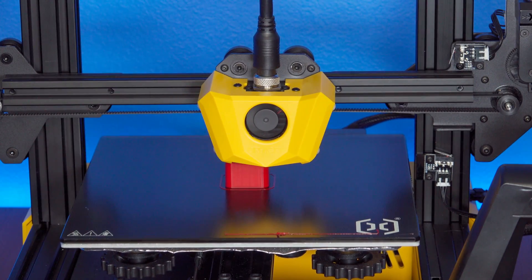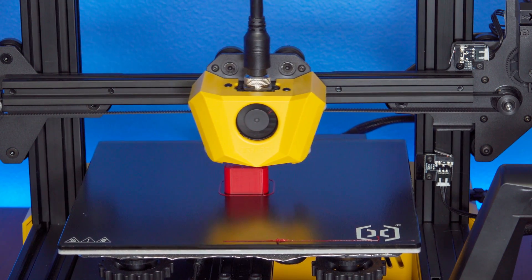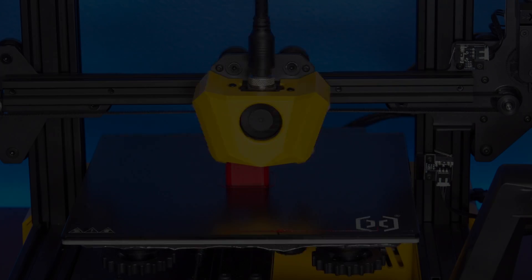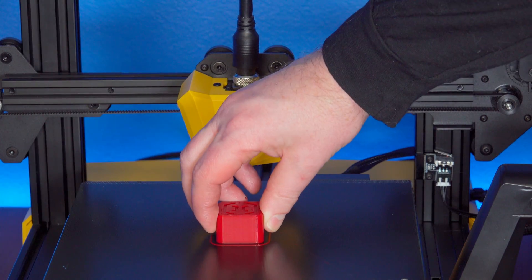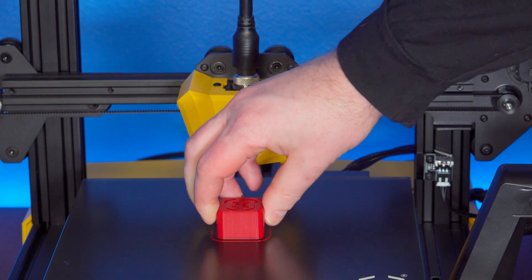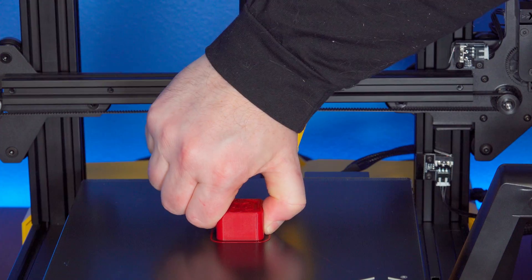The first thing I noticed while it was printing is its speed. They seemed to have this thing cranked up to 11, but the movements were very smooth and didn't jerk the printer around. The print finished quickly and as I would expect with the build surface, the part stuck down very well.